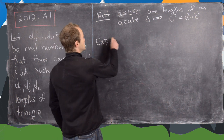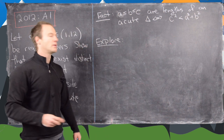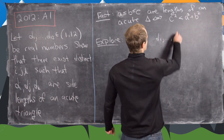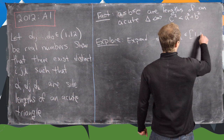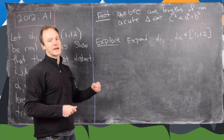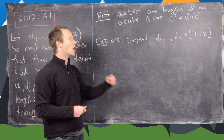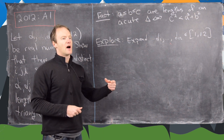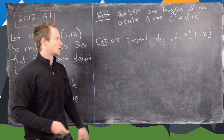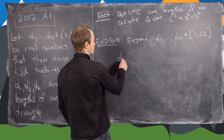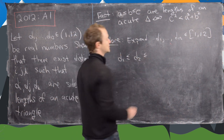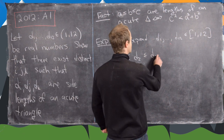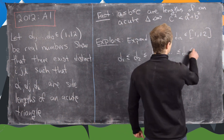Let's explore towards a solution. First, we expand the interval so that d1 and d12 are within the closed interval 1 to 12. We want to examine what it would take for there to be no side lengths that produce acute triangles — looking for what would force all triangles to be right triangles. We assume d1 ≤ d2 ≤ d3 ≤ ... ≤ d11 ≤ d12, renaming if necessary.